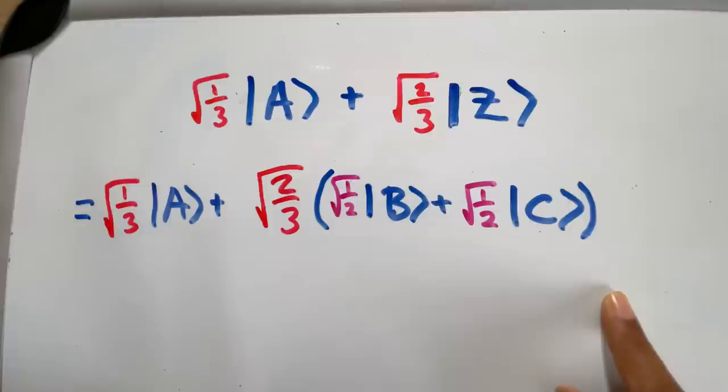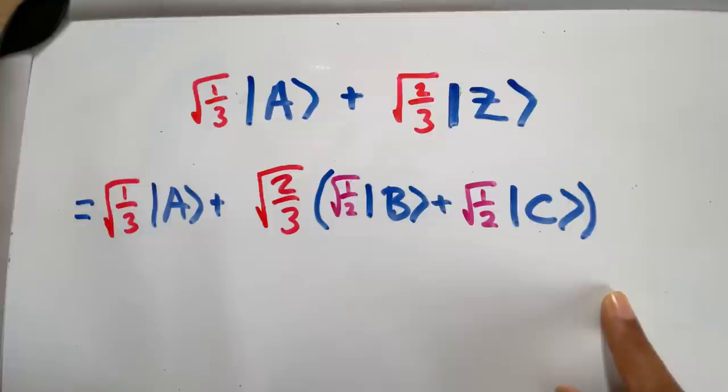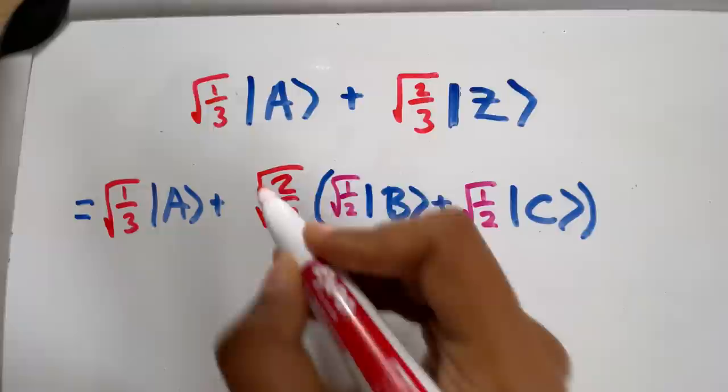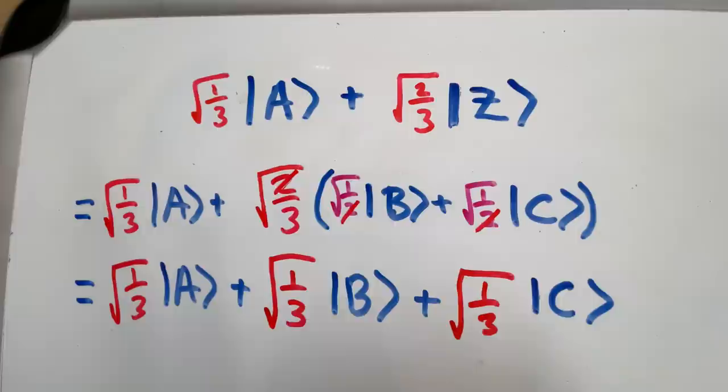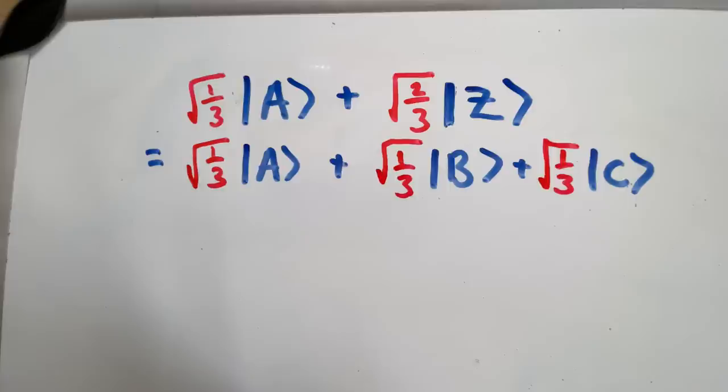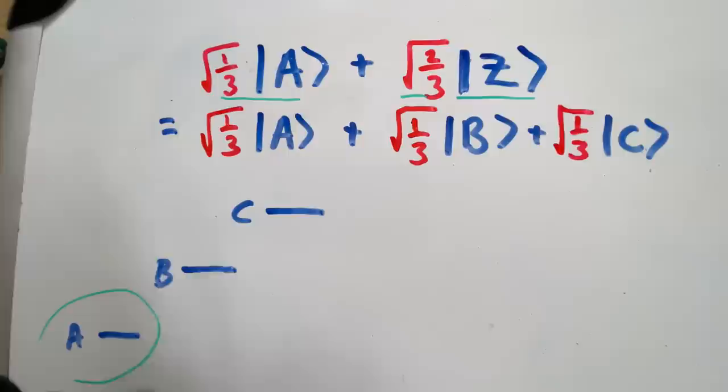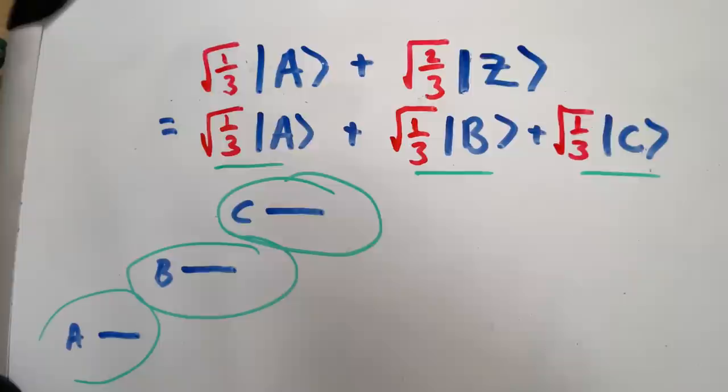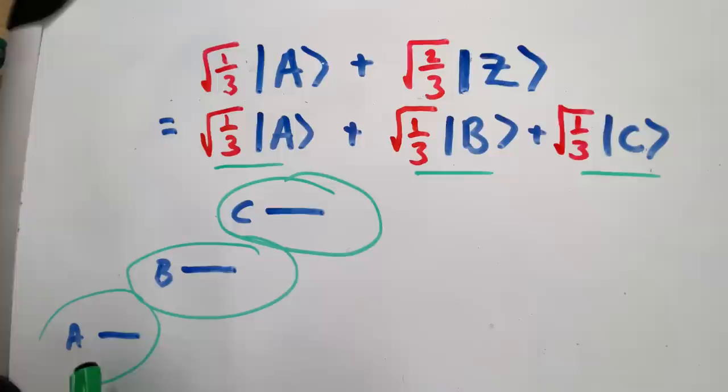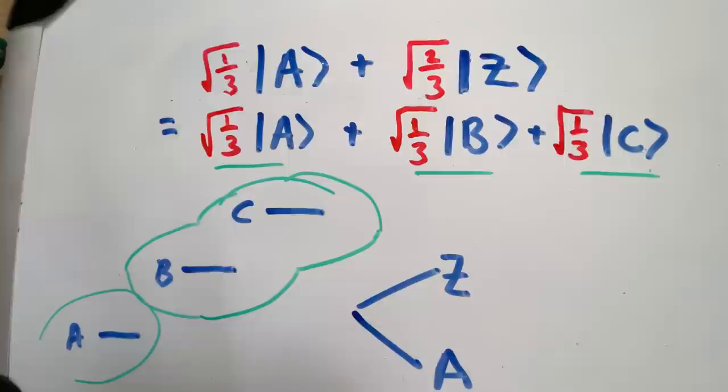Now that we've rewritten Z this way, let's rewrite the entire original state in terms of this new Z. Now that I've subbed that in, let's go ahead and cancel this with those coefficients. And once we've expanded and simplified that all, we see that the original state now looks just like that state we had before, where it was an equal superposition of A, B, and C. The really clever thing that we did was we made sure that these coefficients are going to be the same for all three of them.